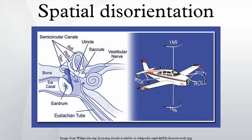Statistics show that between 5% and 10% of all general aviation accidents can be attributed to spatial disorientation, 90% of which are fatal. Good spatial orientation on the ground relies on the use of visual, vestibular, and proprioceptive sensory information. Changes in linear acceleration, angular acceleration, and gravity are detected by the vestibular system and the proprioceptive receptors, and then compared in the brain with visual information. Spatial disorientation and G-induced loss of consciousness are two of the most common causes of death from human factors in military aviation.